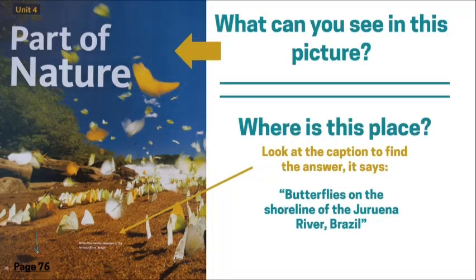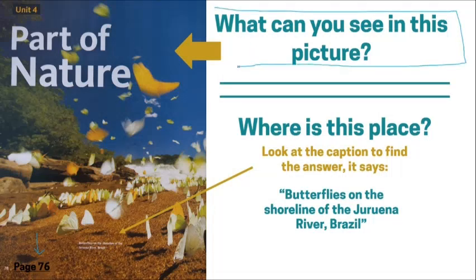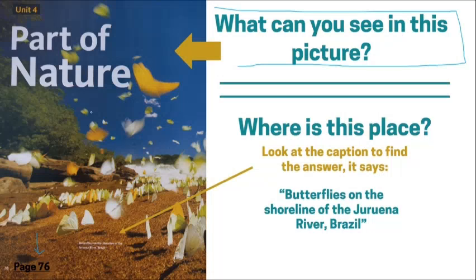Now on page 76, the first question is: what can you see in this picture? We got a big picture that covers all of page 76. Where is this place? Well, we can look at the caption to find the answer. The caption says: butterflies on the shoreline of the Juruena River, Brazil. So this picture is taken in Brazil, on a shoreline of the Juruena River. As you can see in this picture, we got lots of butterflies that live here.